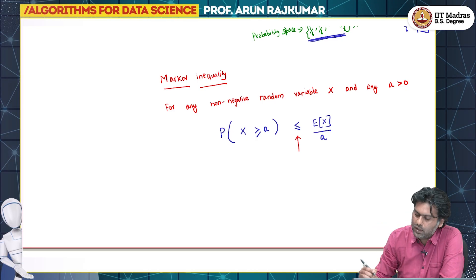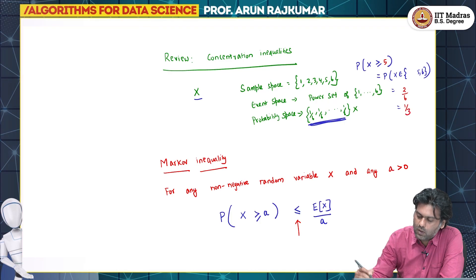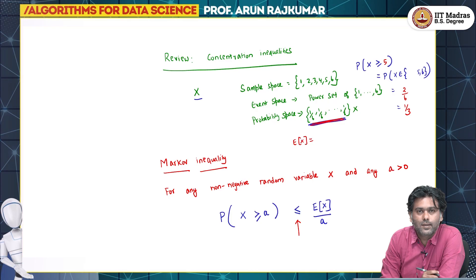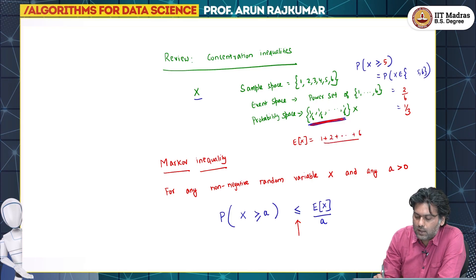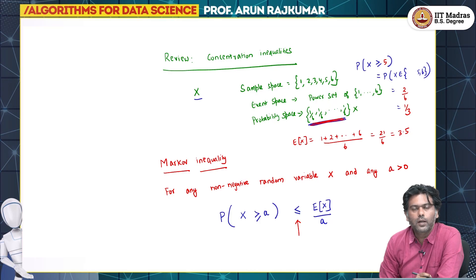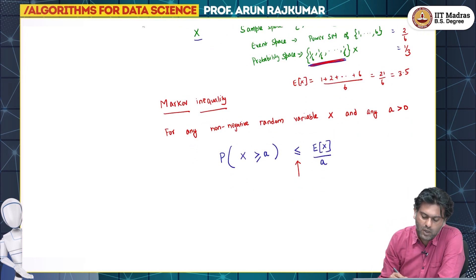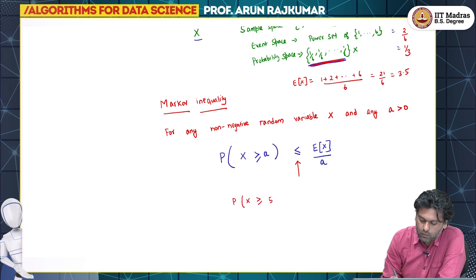Instead of asking about 3, let us say I ask about 5. The probability that X is greater than or equal to 5 would be 2/6 = one-third, since X can be 5 or 6. Now let us say I am not giving you this information — I am only giving you E[X]. The expected value of X for this random variable is 1×(1/6) + 2×(1/6) + ... + 6×(1/6) = 21/6 = 3.5. So I tell you this is a random variable whose expected value is 3.5, and I ask: what is the probability that X is greater than or equal to 5?